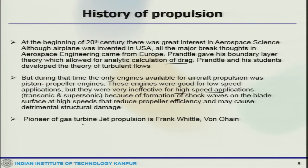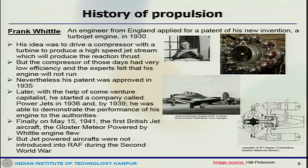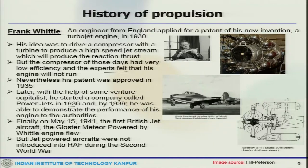The pioneer of gas turbine jet propulsion is Frank Whittle and Von Ohain. Whittle, an engineer from England, applied for a patent for his new invention — a turbojet — in 1930. The idea was to drive a compressor with a turbine to produce a high-speed jet stream for reaction thrust, but compressors of those days had very low efficiency. Nevertheless, his patent got approved, and with venture capitalist help they started a company called Power Jets in 1936, and by 1941 they were able to demonstrate the engine performance.